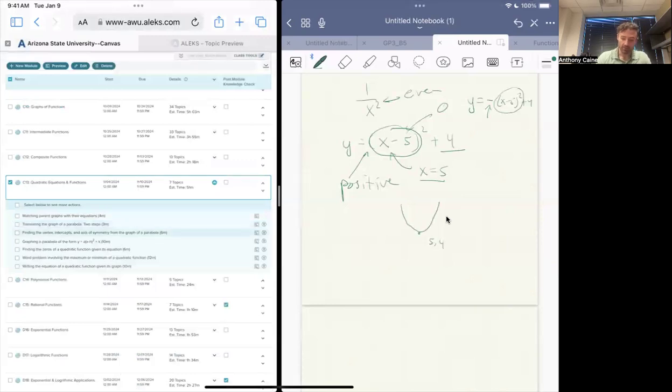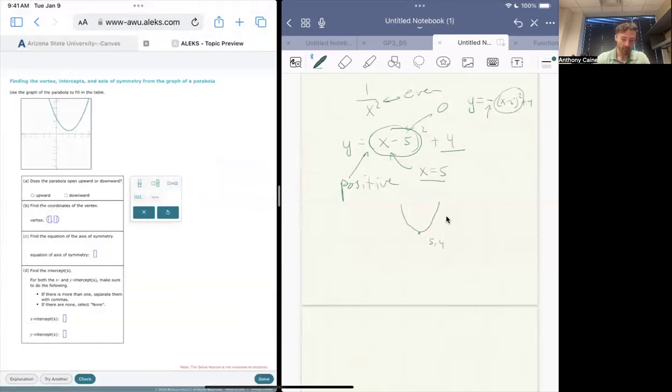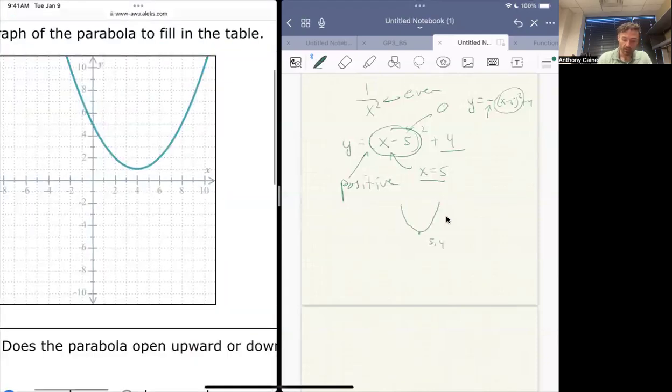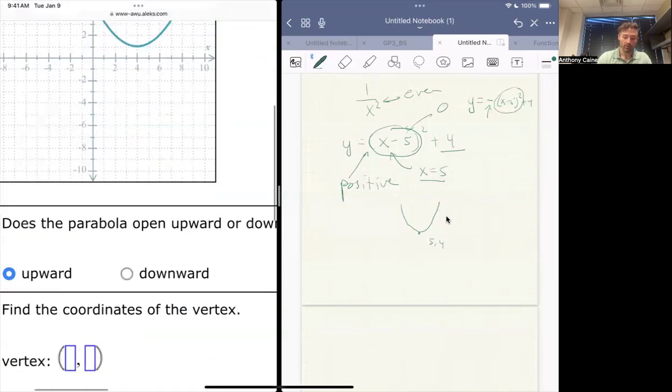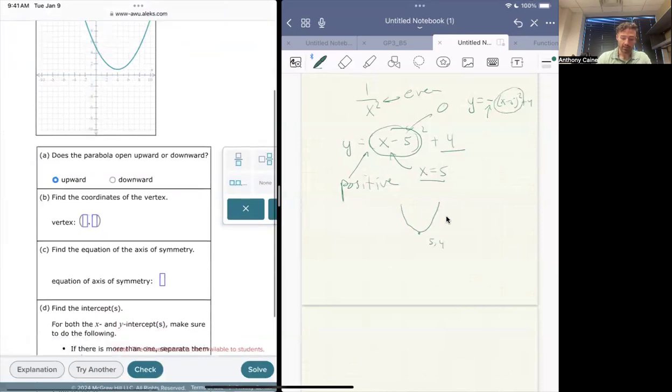Finding the vertex and symmetry of a parabola. You can mostly just answer it by looking at the picture, the parabola opens upward. What's the vertex? You can zoom in here, and you can see that minimal spot is when x is four and y is one. So you would enter four, one. Find the axis of symmetry.